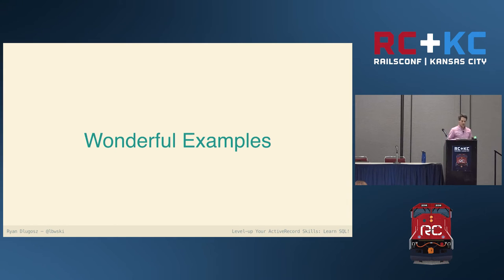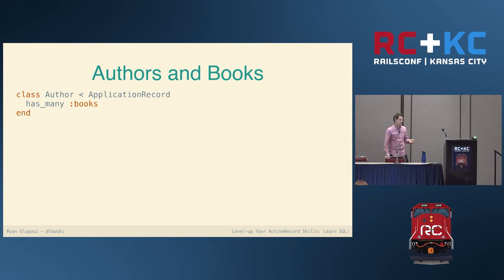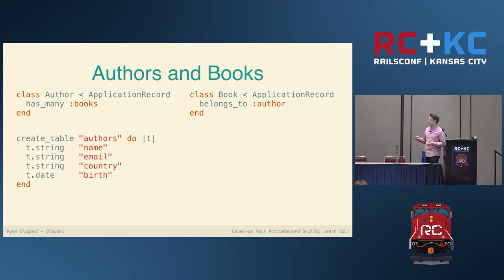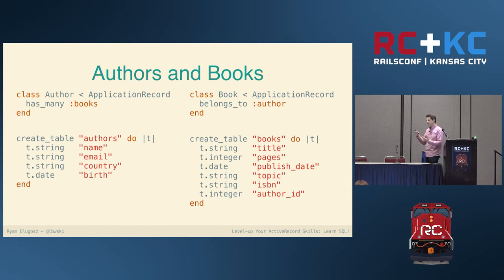We'll look at a couple of examples. To do this we need a basic schema — we'll create authors and books using ActiveRecord. An author has many books; a book belongs to an author. In the migration: authors have a name, country, email, and birth date. Books have a title, pages, publication date, topics, ISBN number, and most importantly an author ID — which is how books are tied back to their corresponding authors inside the database relation.